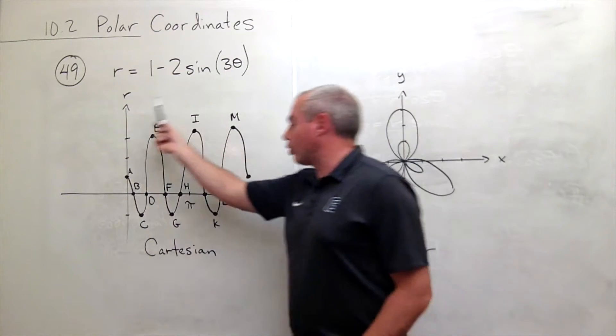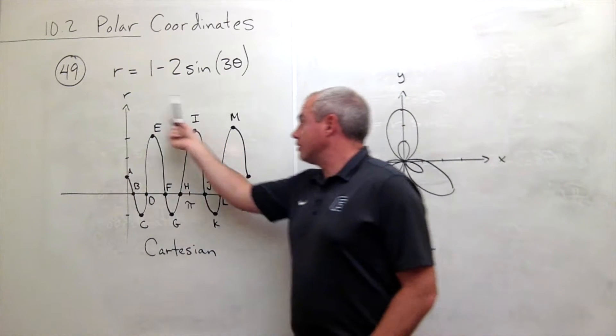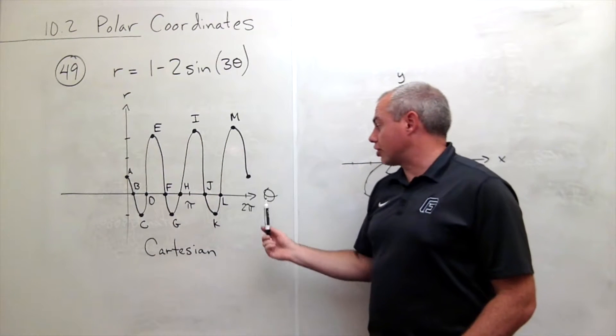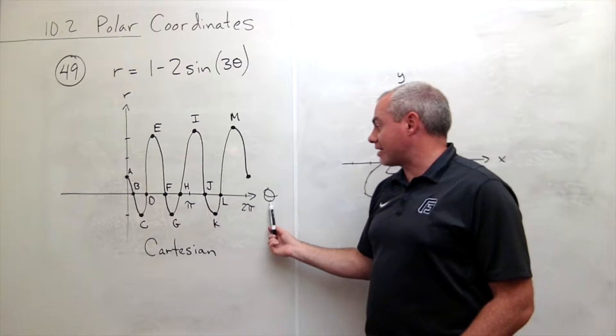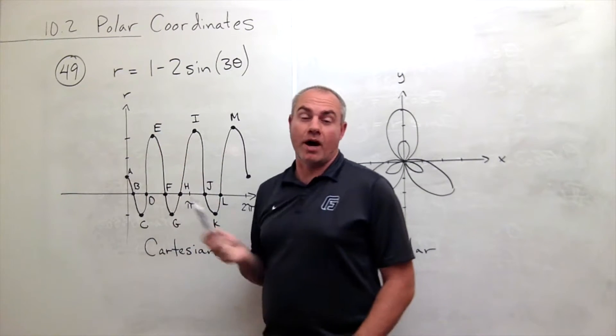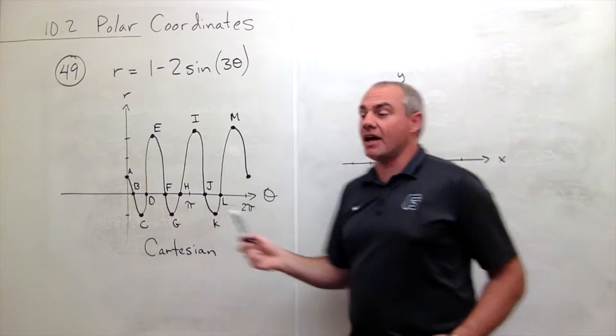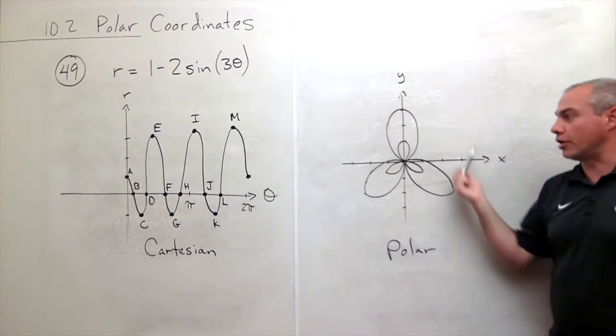I've graphed it as if it were a Cartesian curve with theta being the x value and r being the y value, and then I've also graphed it as a polar curve.